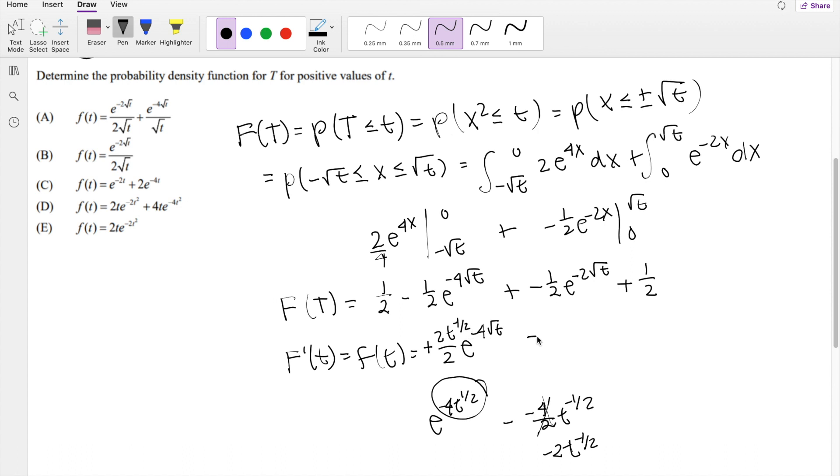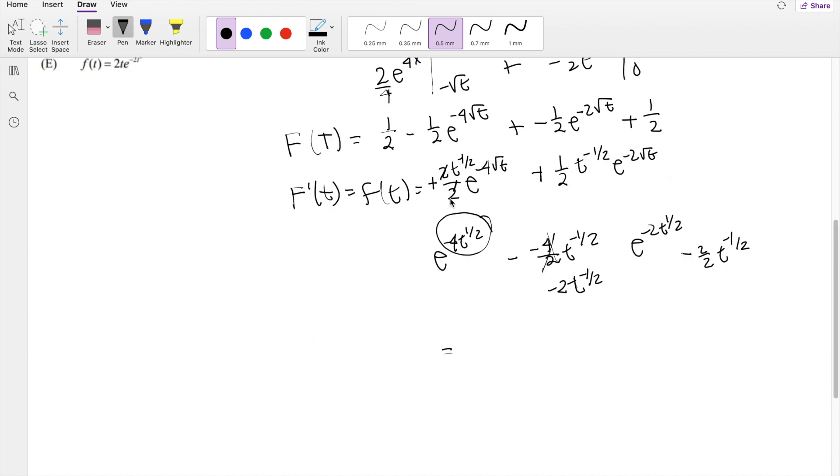Plus or minus 1 half, same idea here, e to the negative 2 to the root t, you can think of it as negative 2t to the 1 half. So then this is, when you take the derivative, it becomes negative 2 over 2, t to the negative 1 half, times, so 2 negatives make a positive here, t to the negative 1 half, e to the negative 2 root t. The 2s cancel out here.